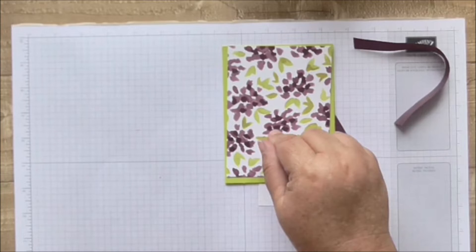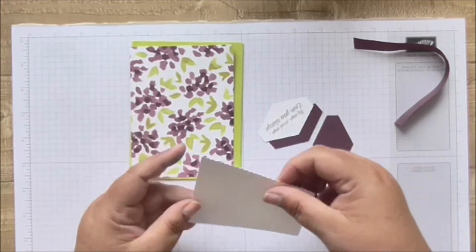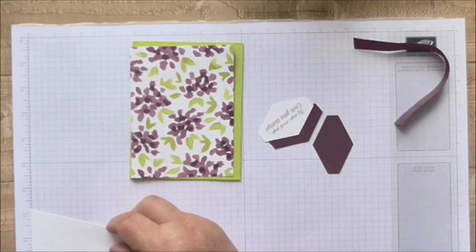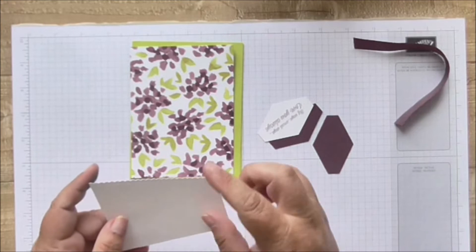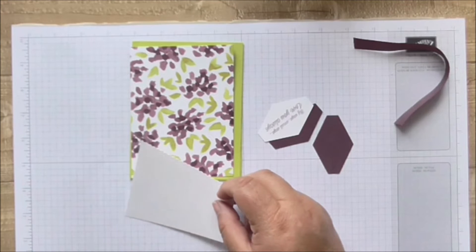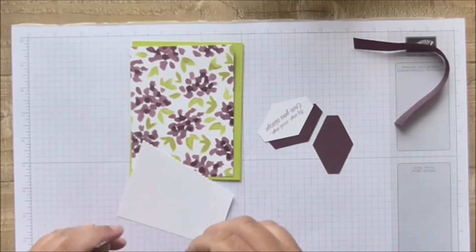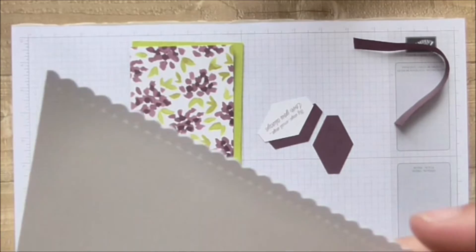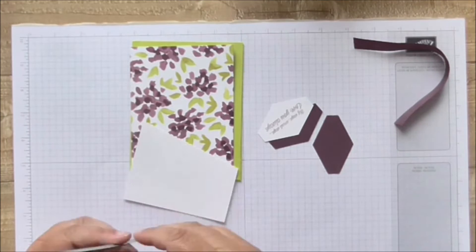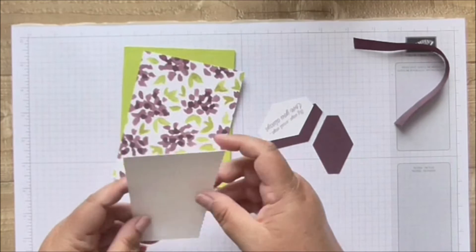Then on top of that I've got a piece of whisper white which measured three and seven eighths by three and a quarter, which is 9.8 centimeters by 8.3 centimeters. But then I used this edging framelit to just create this lovely scallop stitched edge on the card and I just sort of laid it randomly across on an angle.